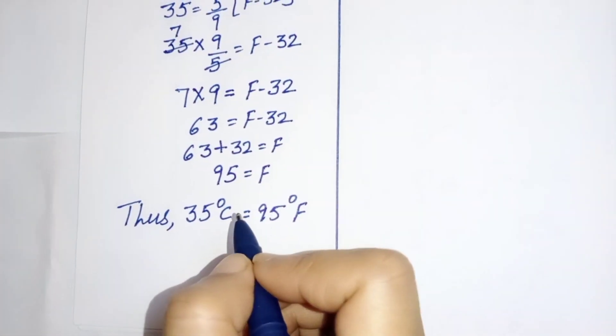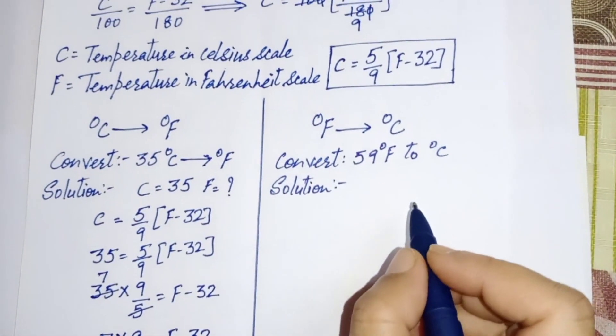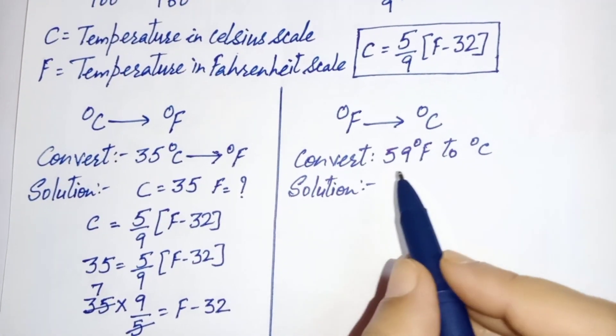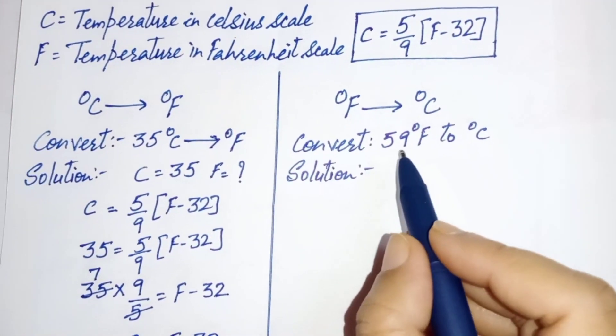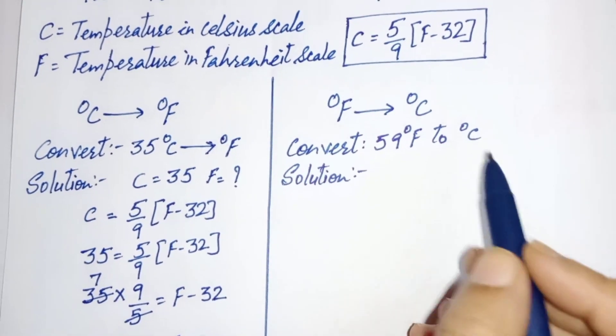Now take one more example. Suppose we need to convert 59 degree Fahrenheit to degrees Celsius.